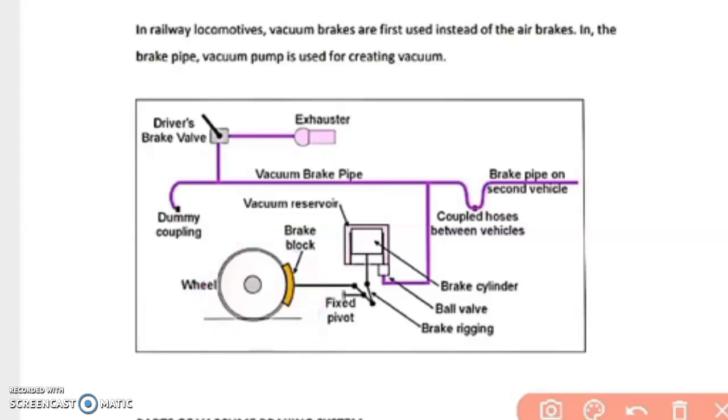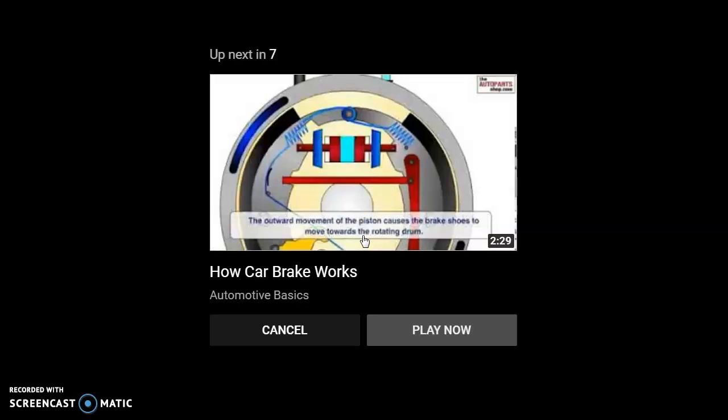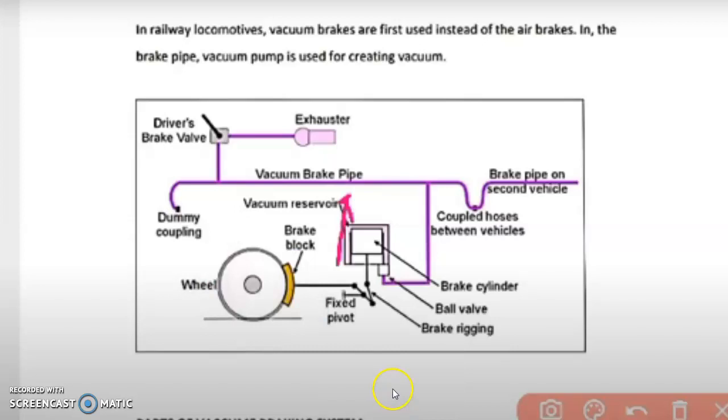When this brake block contacts with this wheel, friction takes place between the brake block and the wheel, and due to this friction the speed of this wheel is finally reduced and finally stopped.